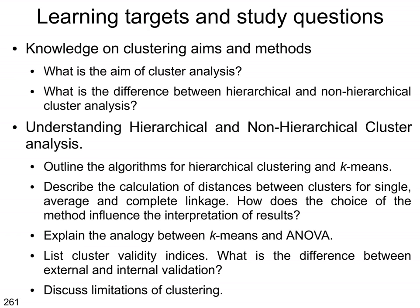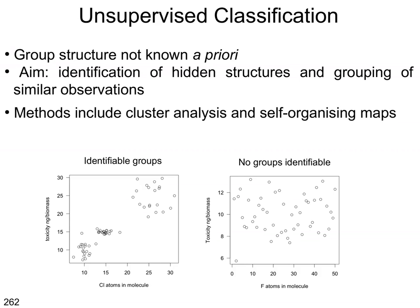We start with unsupervised classification. In unsupervised classification we don't know whether the data has a group structure and we search for a potential group structure that is not known a priori — we want to identify hidden structures or groupings of similar observations. Note that the examples provided here are just for illustration and are not based on real data.